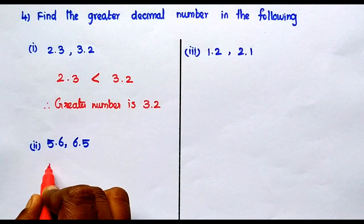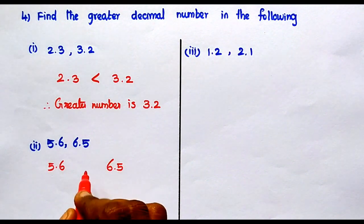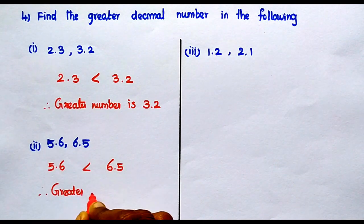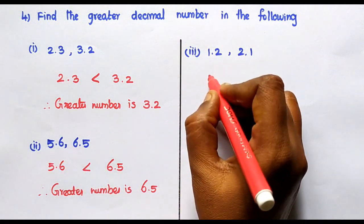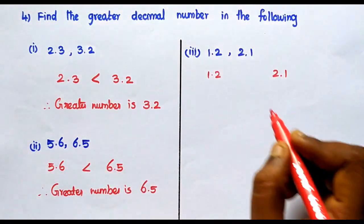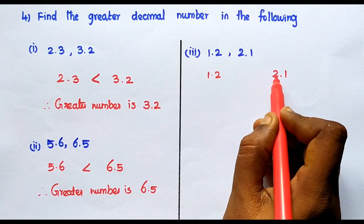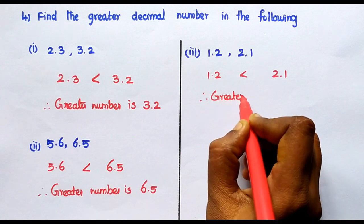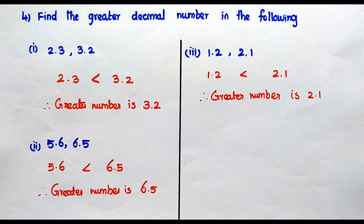Next: 5.6 and 6.5. Here 6.5 is greater than 5.6. Therefore, the greater number is 6.5. Next: 1.2 and 2.1. The whole number part is 1 here, and 2 here. So 2.1 is greater than 1.2. Therefore, the greater number is 2.1. That is the answer.